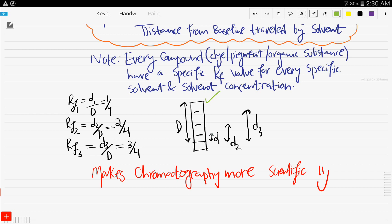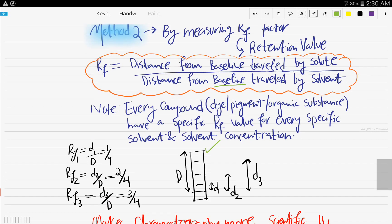Which means this is the chromatogram that you obtained. And so solute number one traveled this distance. You measure it from the baseline. It's really important from the baseline. And so is the D2 and D3 all from the baseline. And D is the distance from the baseline traveled by the solvent till the end. And so this over this gives you a value. What's that value? It's called the retention value.